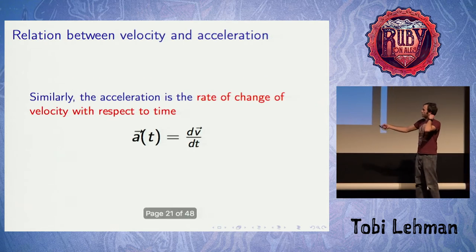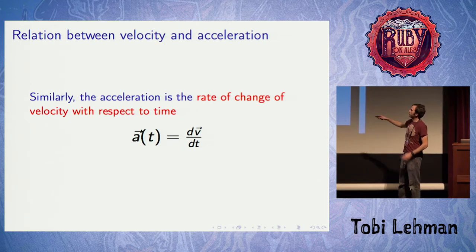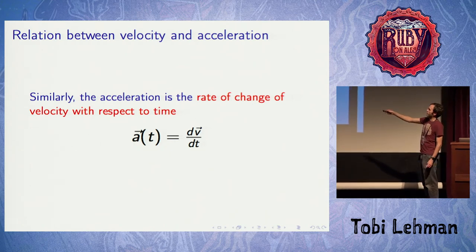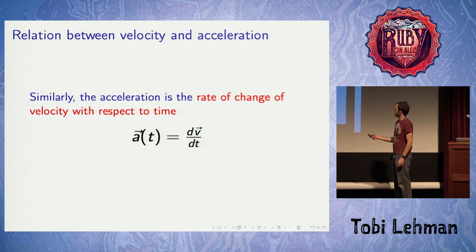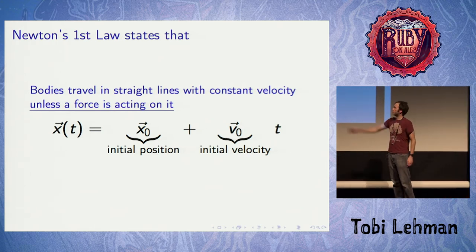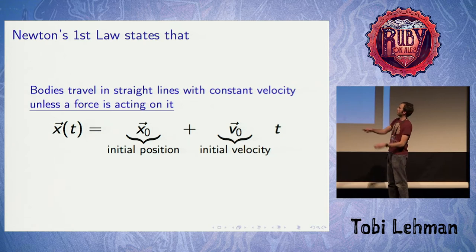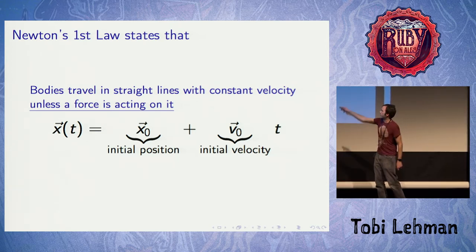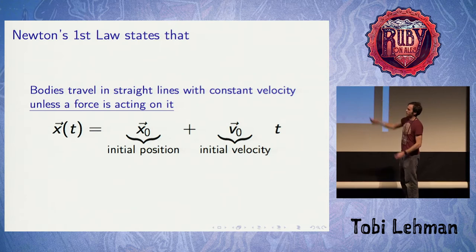If there's no acceleration at all, Newton's very first law gives us a complete specification for the position function. If there are no forces acting on a body, it just travels in a straight line. Given an initial position and an initial velocity, all we have to do is have it trace out a line along that velocity vector because nothing's going to change it. This just traces out a straight line in space — that's another way to understand Newton's first law.